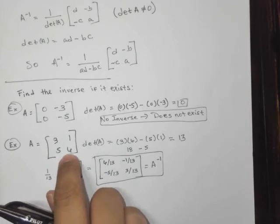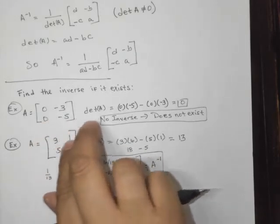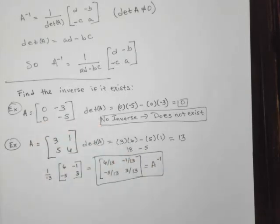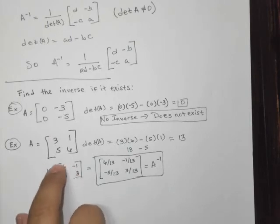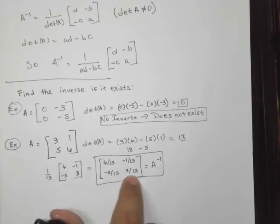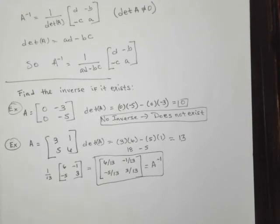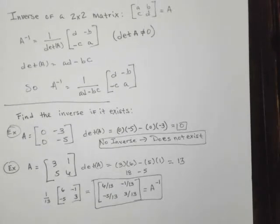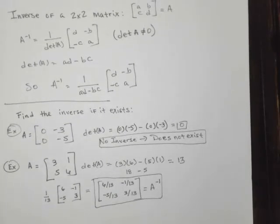But it's as easy as finding the determinant, swapping these two on this diagonal, taking the opposite sign of these two on the diagonal, and multiplying the scalar multiple, which is 1 over the determinant inside the matrix, and you are done. So this is just a few problems on how to find the inverse of a 2 by 2 case.